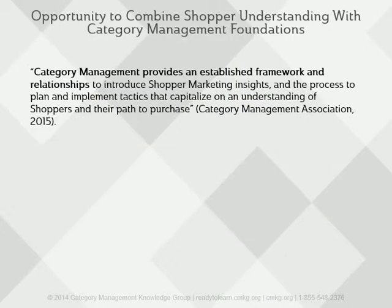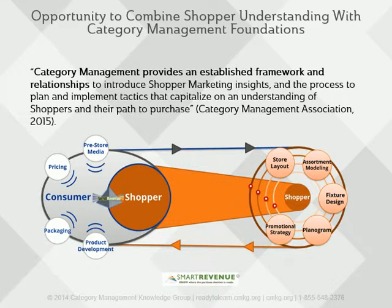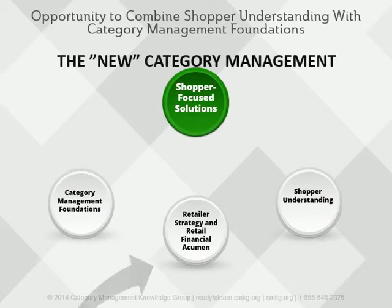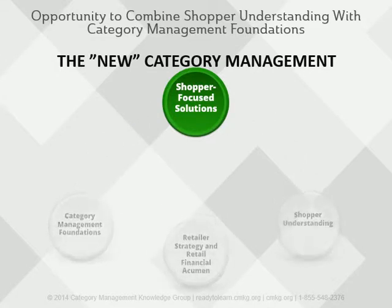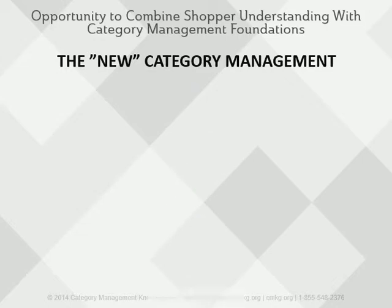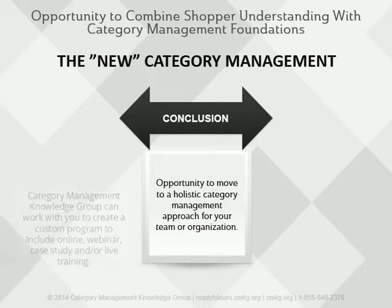According to the Category Management Association, category management provides an established framework and relationships to introduce shopper marketing insights, as well as the process to plan and implement tactics that capitalize on an understanding of shoppers and their path to purchase. Category management and shopper marketing need to be a part of one strategy, as retailers and vendors collaborate to understand what motivates consumers to become shoppers and purchasers along their path to purchase. CMKG can help with this. The opportunity is to infuse shopper into the category management approach, which includes an extension into understanding the category management foundations, retailer strategy, and shopper understanding.